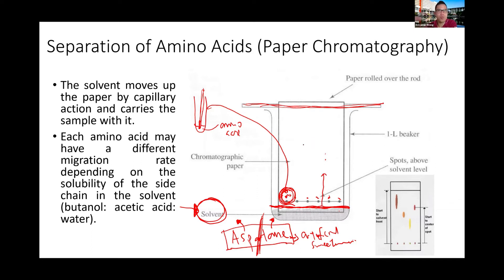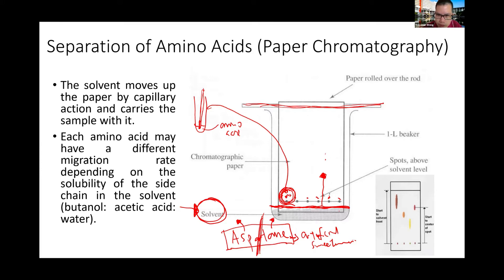The liquid will soak up the paper by diffusion — like water soaking up clothing. It typically takes around 45 minutes to one hour for the solvent to slowly migrate up. As the solvent diffuses upward, it carries the amino acids along with it.